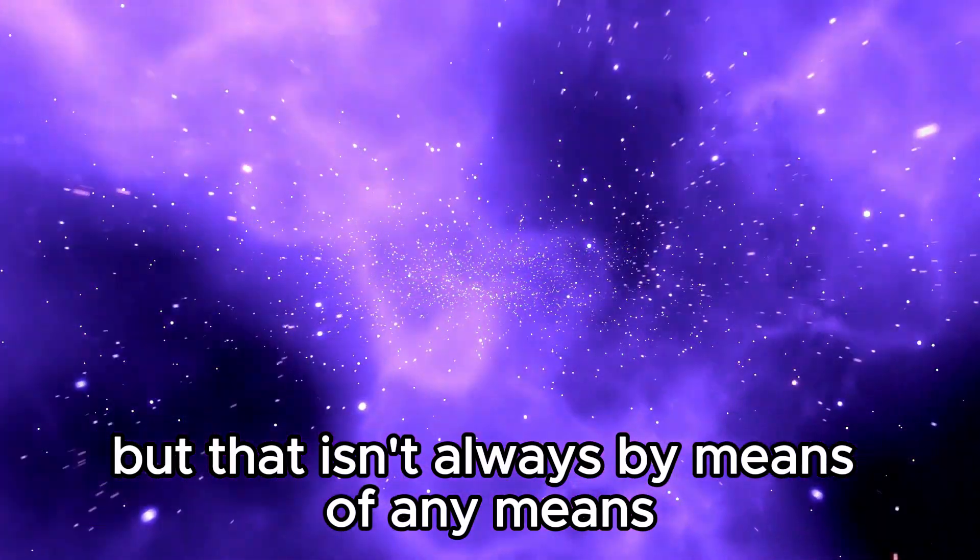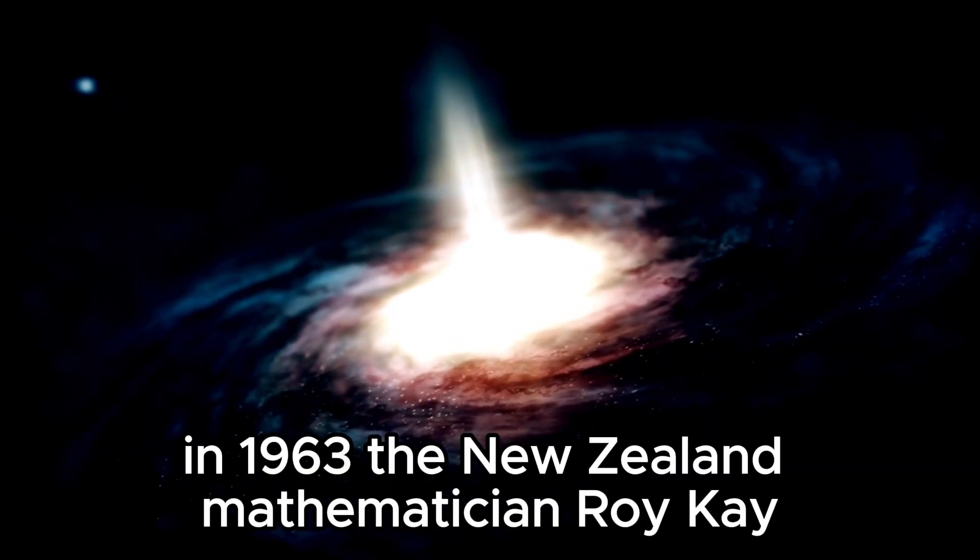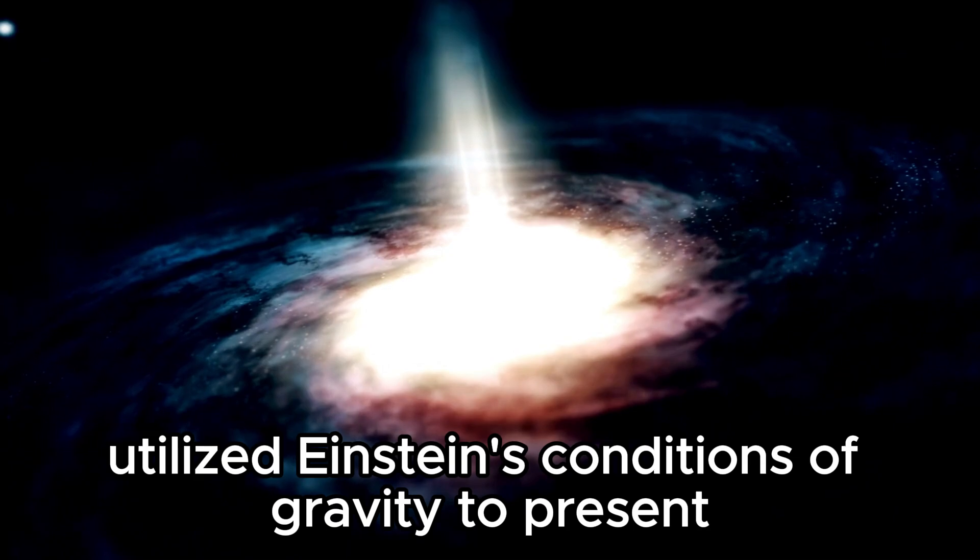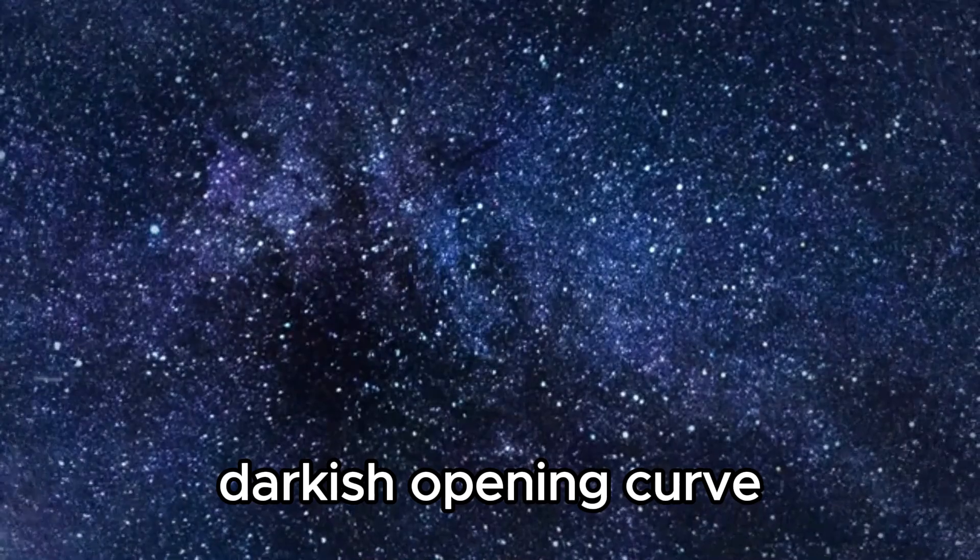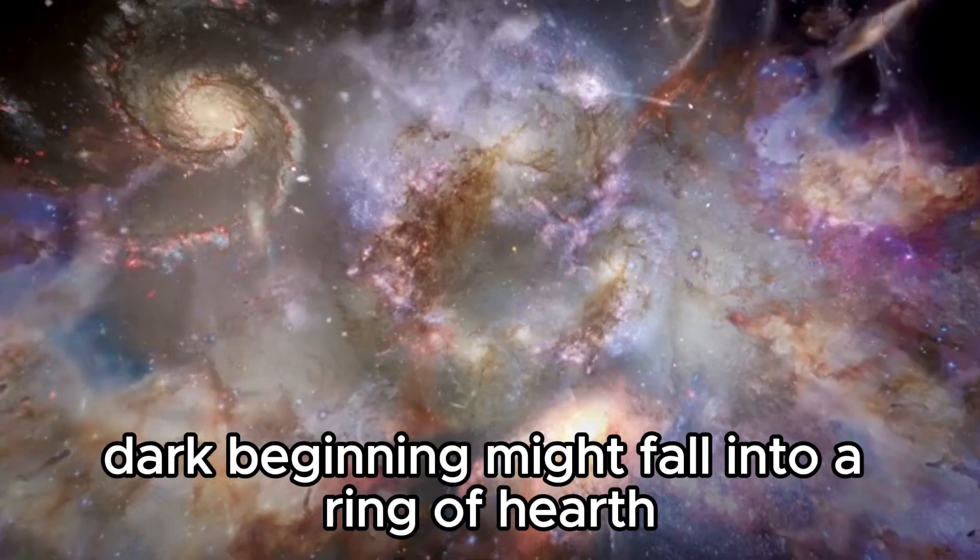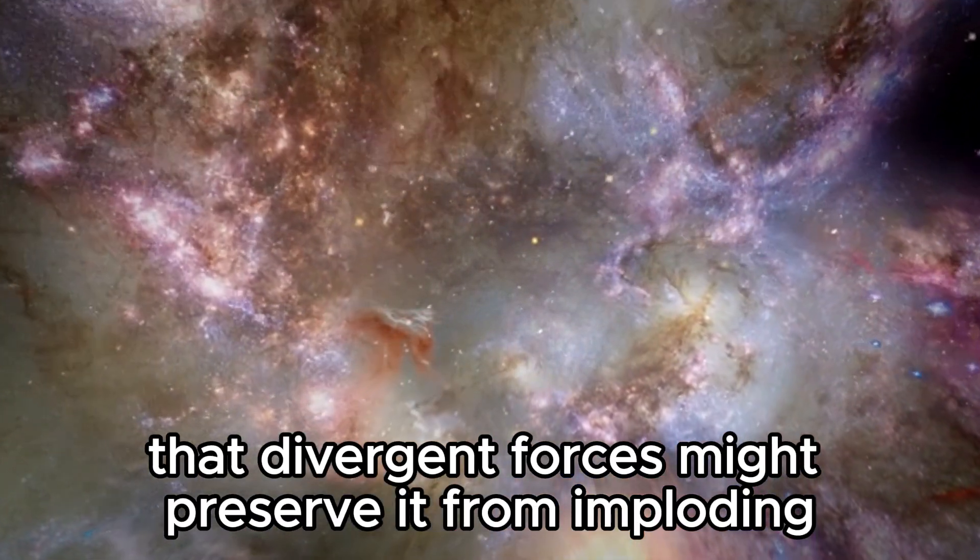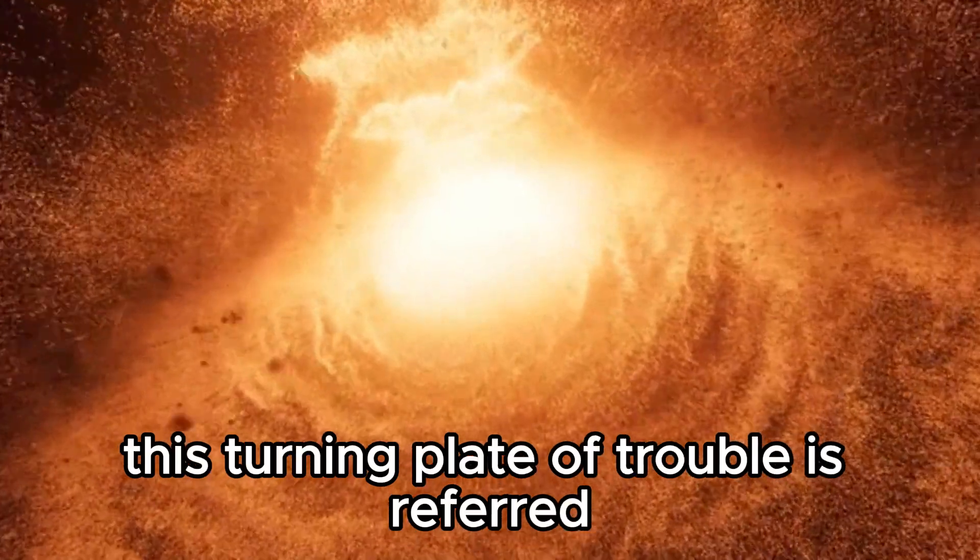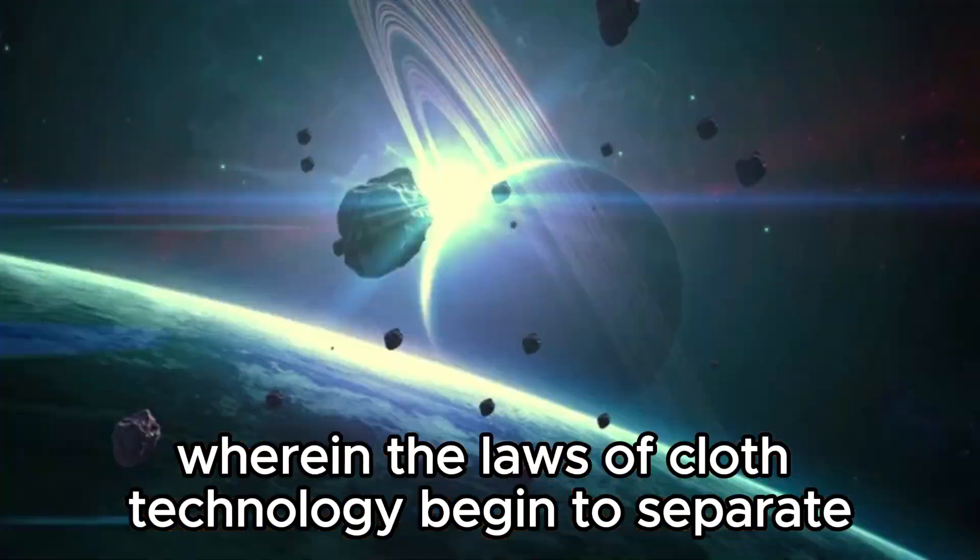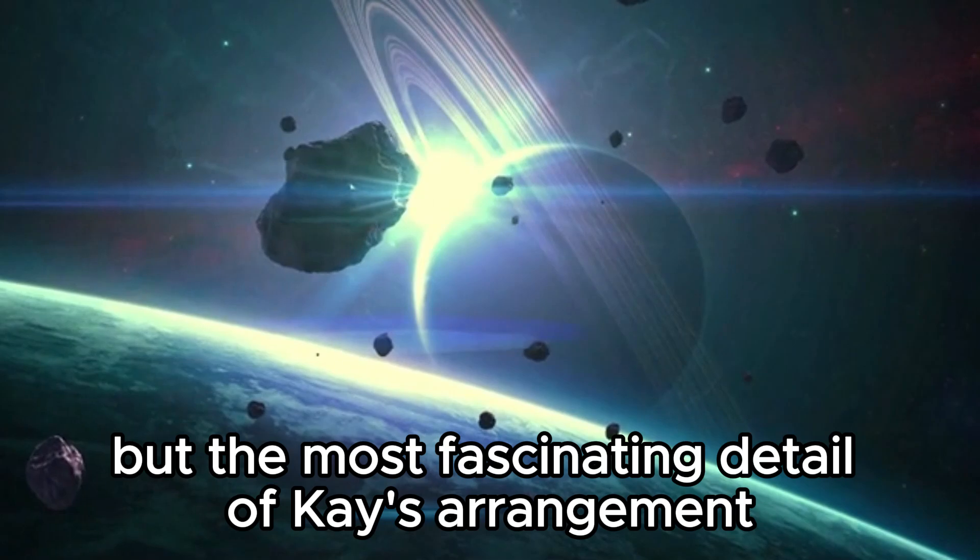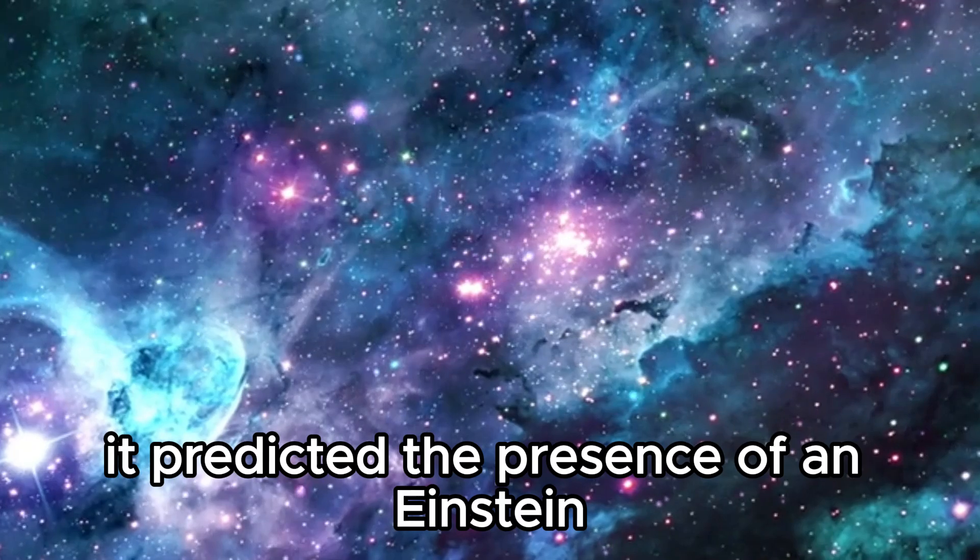But that isn't the only theory about how dark openings work. In 1963, New Zealand mathematician Roy Kerr utilized Einstein's equations of gravity to present the best description of a rotating dark opening. Kerr showed that a rotating dark opening might form into a ring of fire or a thin disk. The circle would rotate so fast that centrifugal forces would prevent it from collapsing. This rotating disk of matter is called the ergosphere, and it is the region surrounding the dark opening where the laws of physics begin to break down.